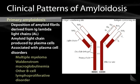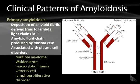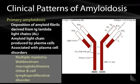In primary amyloidosis, there is deposition of amyloid fibrils derived from Ig-lambda light chains. As we are dealing with antibodies and the creation of light chains, the cells involved will be plasma cells. One should therefore associate primary amyloidosis with various plasma cell disorders, including multiple myeloma, Waldenström's macroglobulinemia, and other B-cell lymphoproliferative disorders.